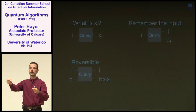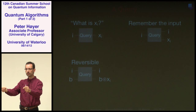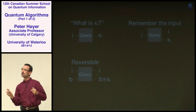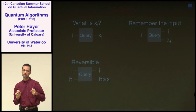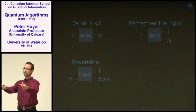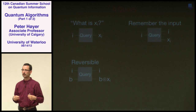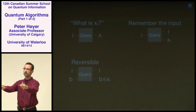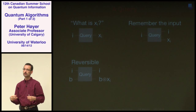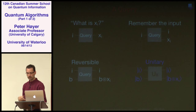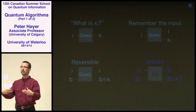A natural way to model undoable queries: I give you index i and a coin face-up. If the bit x_i is one, you flip the coin; if x_i is zero, you don't flip it. If I do this twice I'm back to identity — it's reversible. If x_i is one, the coin is flipped, I ask again, it's flipped back, and I'm back to the original state.